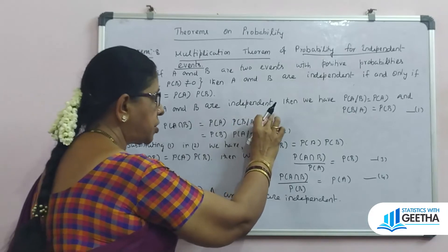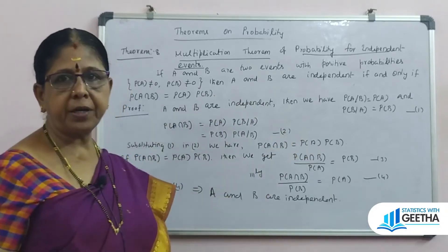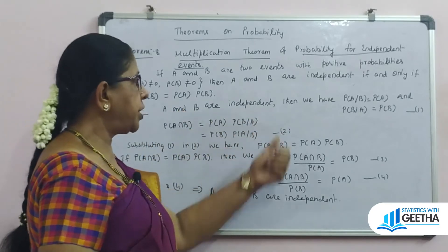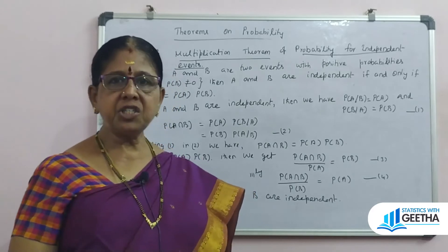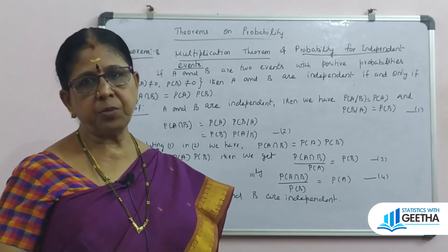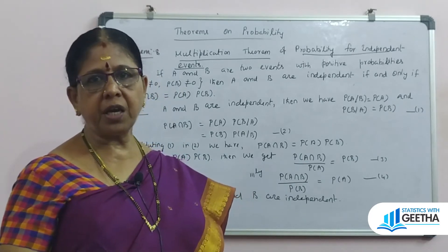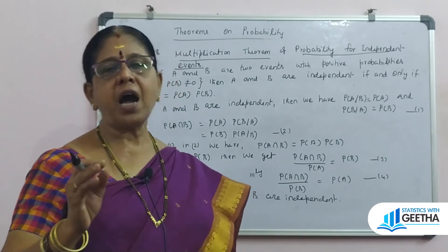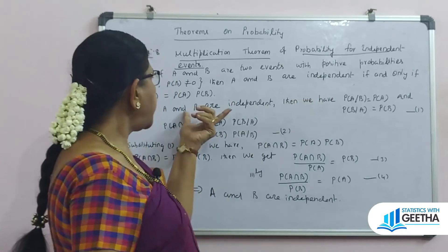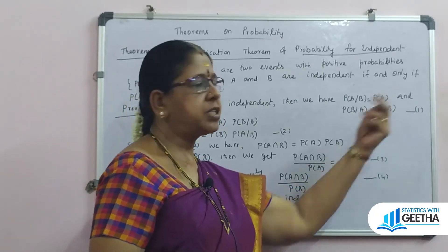To prove the 'if' part: assuming A and B are independent, we need to prove P(A intersection B) equals P(A) times P(B). The definition of independence means the conditional probability of B given A equals the unconditional probability of B. So: P(A|B) equals simply P(A), and P(B|A) equals simply P(B). That is equation 1.